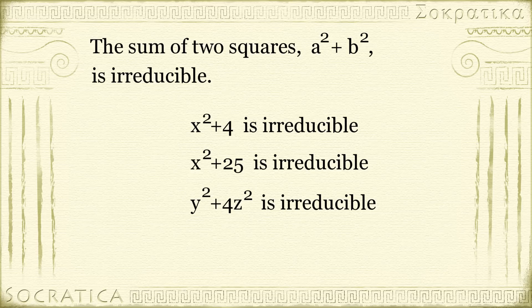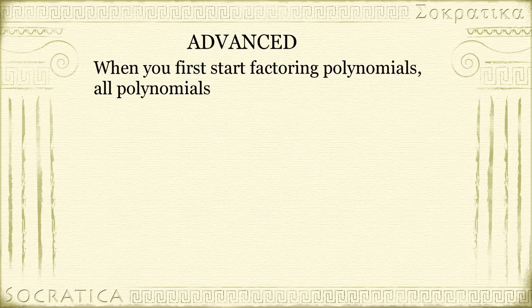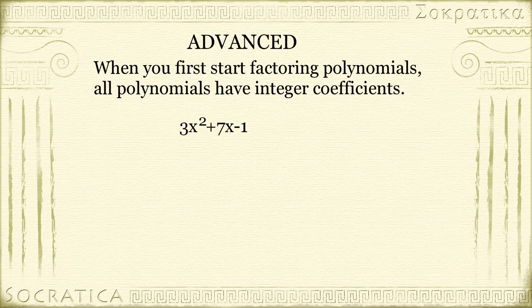However, there is a little more to this story. This is an advanced subject. When you first start factoring polynomials, you will notice that all the polynomials you work with have integer coefficients. For example, 3x² + 7x - 1. All the coefficients and the constant term are whole numbers.